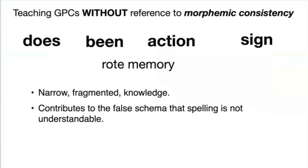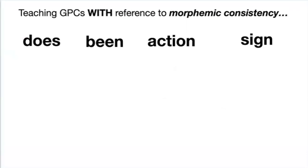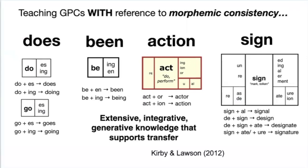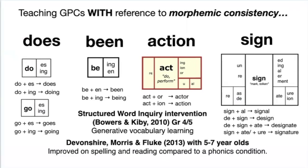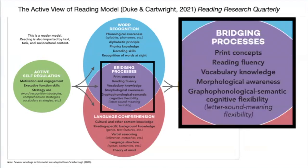Teaching grapheme-phonic correspondences without reference to morphemic consistency forces us to rely on rote memory for at least some graphemes in many words. This is narrow, fragmented knowledge — it contributes to the false schema that spelling is just not understandable. For those who fail, I know of no greater cognitive load than shame. By contrast, teaching grapheme-phonic correspondences with reference to morphemic consistency uses so-called irregular words to build an accurate schema of spelling as an ordered system that represents the interrelation of pronunciation and meaning. Interventions using these tools have found empirical evidence of transfer for spelling, reading, and vocabulary. This also follows current research recommendations like those of Duke and Cartwright, whose active reading model highlights that word recognition and language comprehension are interrelated from the start, and that morphology is a central bridge between the two.